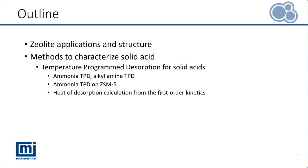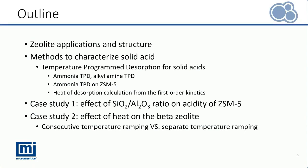We will see there are many methods available to characterize a solid acid, but we will focus on the temperature program desorption, which is one of the most widely used techniques. An example of ammonia TPD on ZSM-5 will be presented with the heat of desorption obtained from the first order kinetics. And lastly, we will go over two case studies: the first on the effect of silica alumina ratio on the acidity of ZSM-5, and the second on the effect of heat on the beta zeolite.